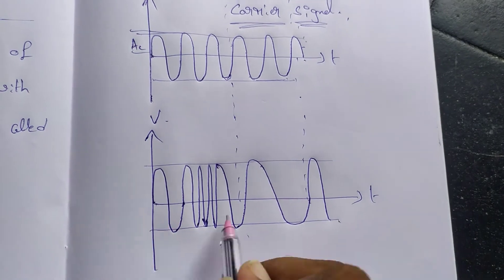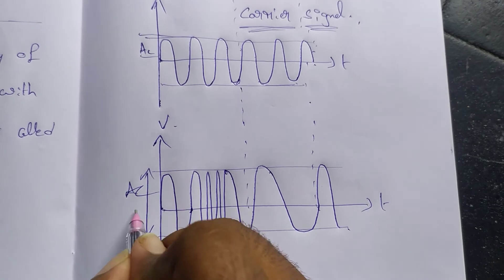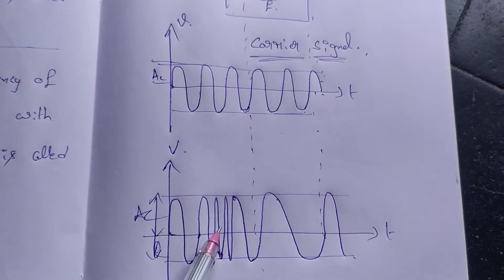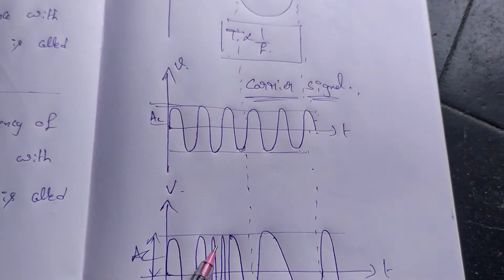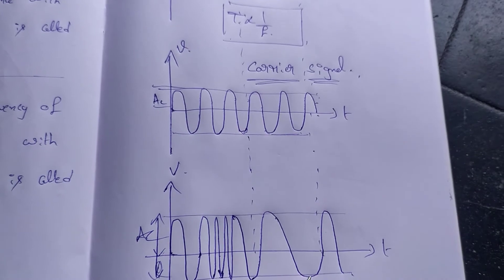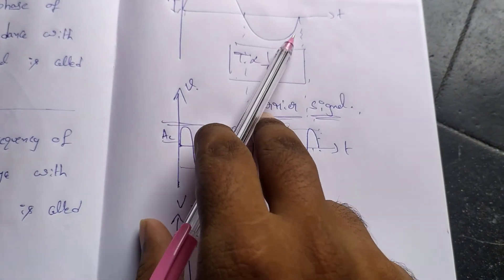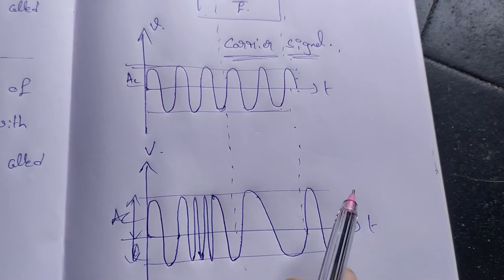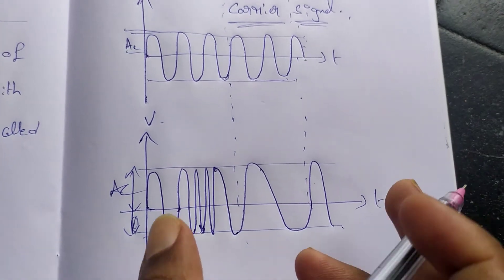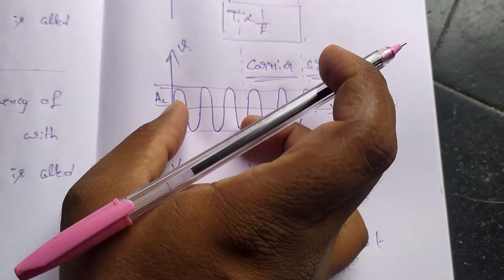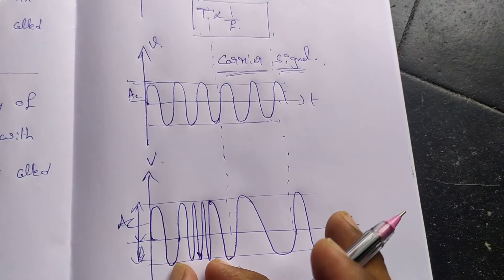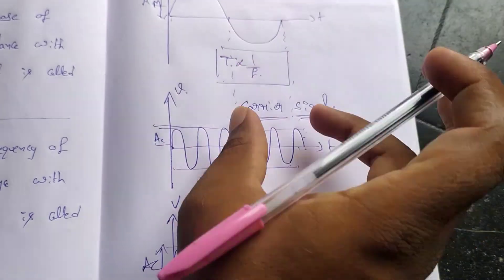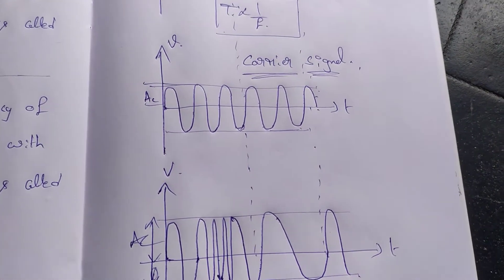Here is the signal with constant amplitude. The amplitude should be AC and constant. Here is the frequency of the carrier signal — at the top, frequency is high. At the negative half cycle, the frequency is very low. This cycle is repeated. The upper band is the carrier signal with constant frequency. This is the modulated signal.